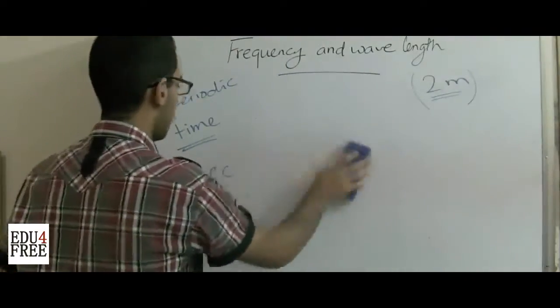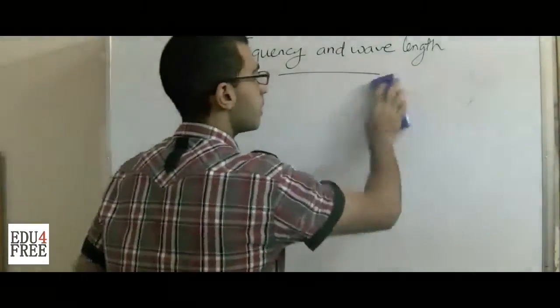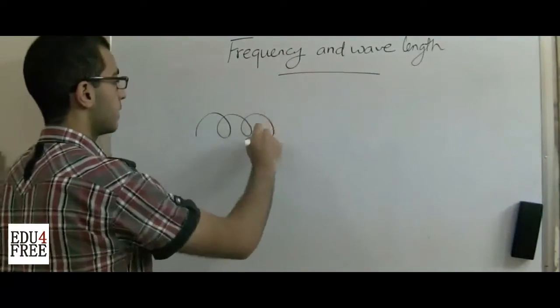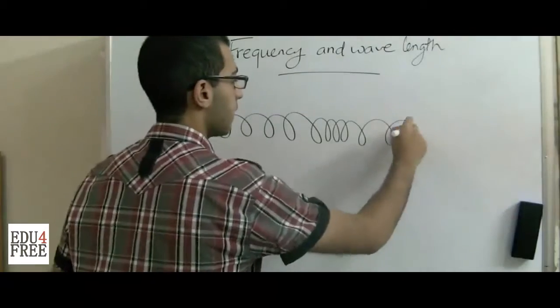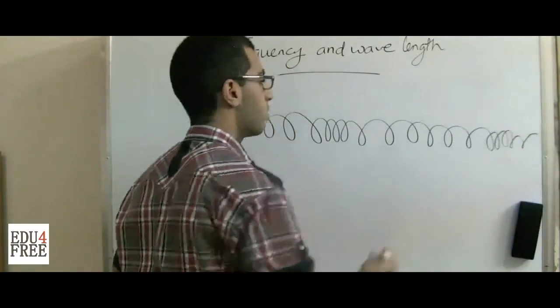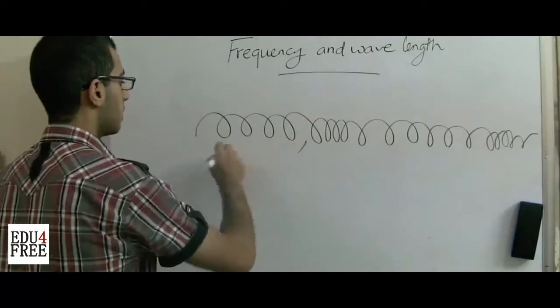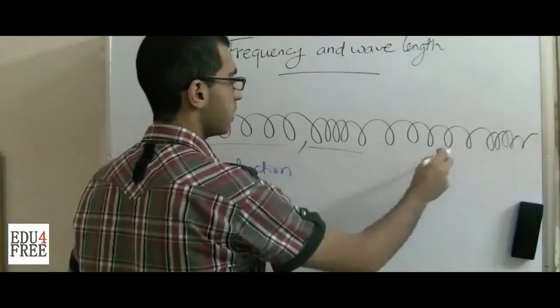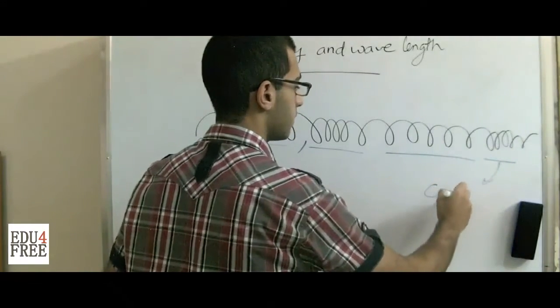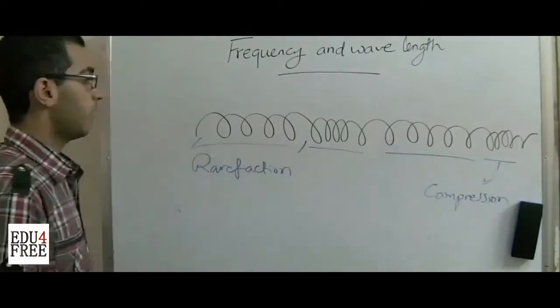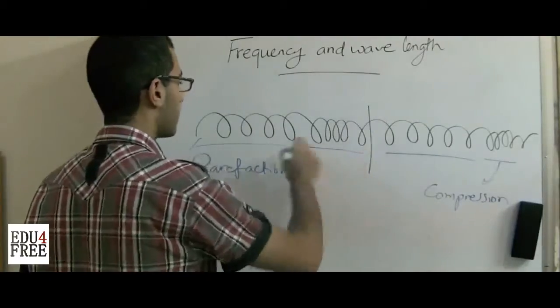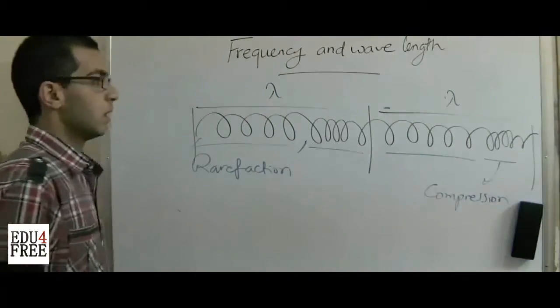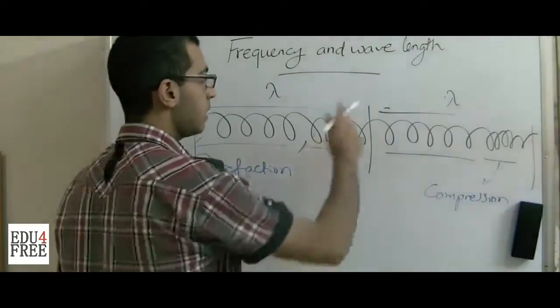It's also the same thing in the longitudinal waves. Like, if we have a spring and it has a rarefaction, then a compression, then a rarefaction, then a compression here, and so on. The wavelength here is the distance between two successive compressions and rarefactions. So this is a wavelength, and this is a wavelength.